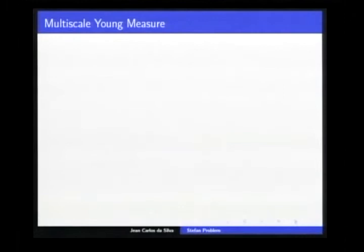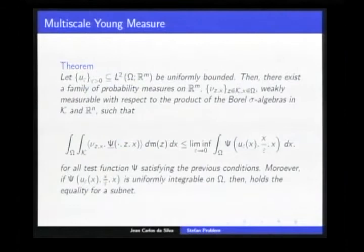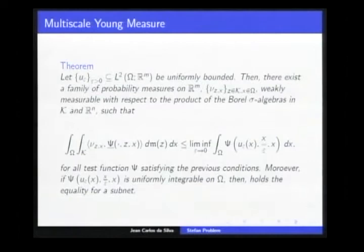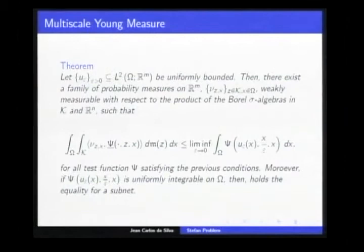With such a function, we have the following theorem. If you have a sequence of functions in space L2 that is uniformly bounded, there exists a family of probability measures giving the following sub-representation. This family of measures we call the two-scale Young measure. This notion was first introduced in the periodic case for solving nonlinear problems by E and Serre, and in the non-periodic setting by Hermano and Ambrose. If the function is uniformly integrable in omega, the right-hand side converges to the left-hand side.